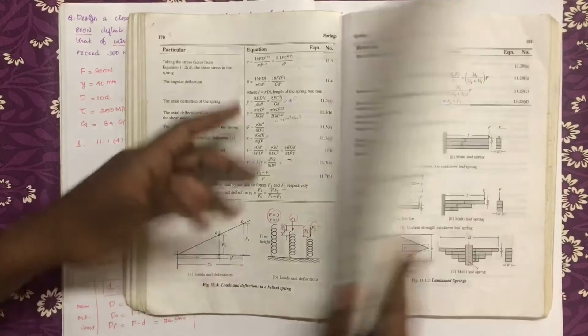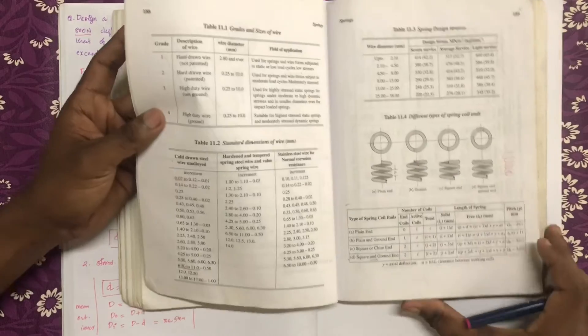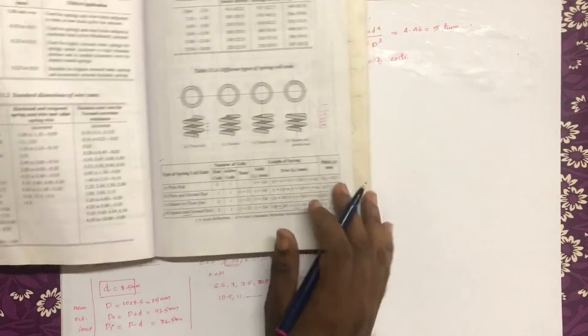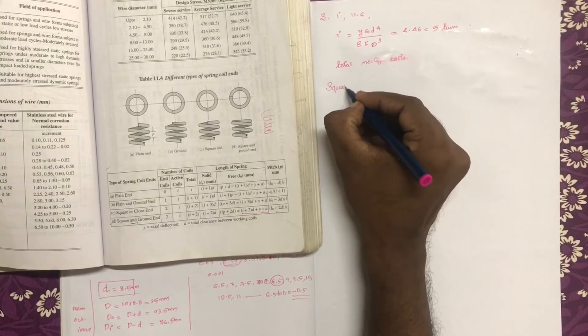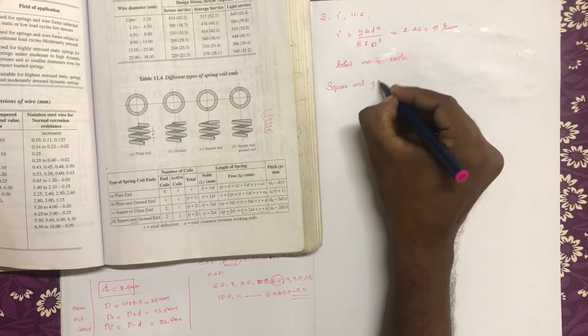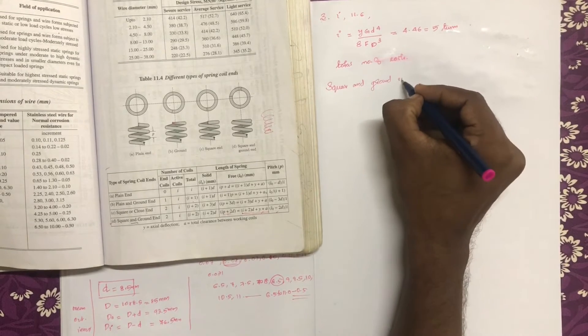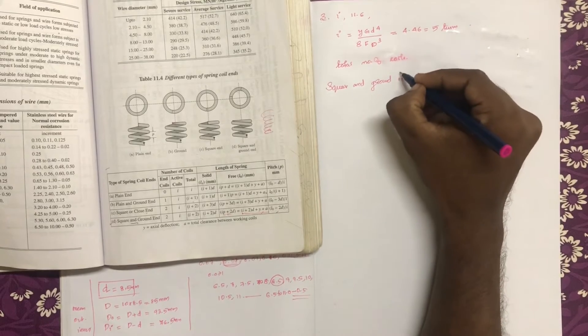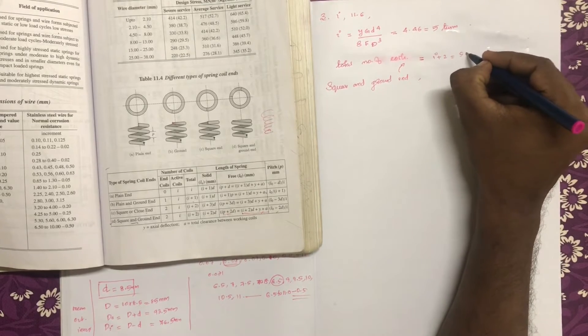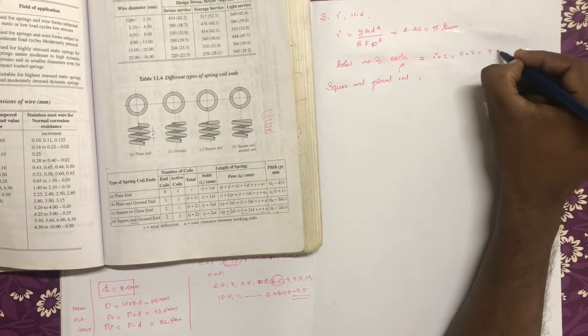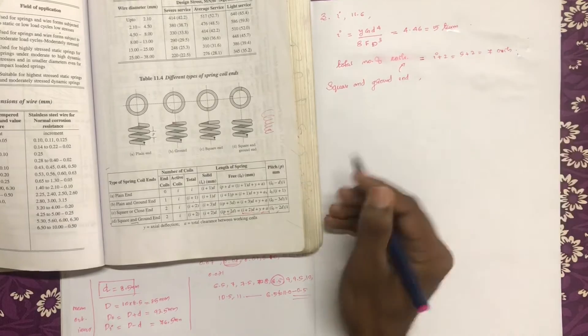The total number of coils is equal to i plus 2, which gives a total of 7 coils.